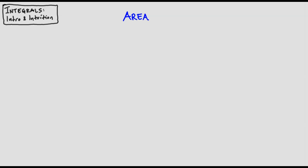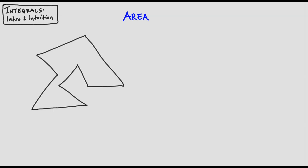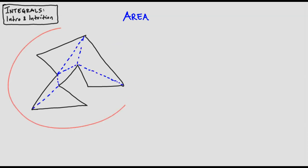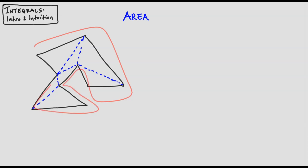Let's put calculus aside and go back to pre-calculus. In principle, it's easy to find the area of any polygon—a figure made up of straight sides. You don't know a formula for dealing with an irregular polygon, but you can chop it into pieces whose areas you can find. Given any polygon, we can always connect vertices to triangulate it—turn the original polygon into a bunch of individual triangles, seven of them in this case.